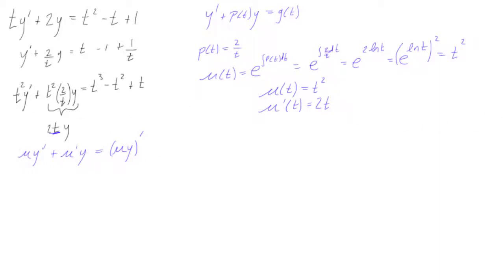So we can rewrite the left-hand side of the equation as μ times y, μ times y, all primed, take the derivative of the whole side, is equal to, well, this was t cubed minus t squared plus t.